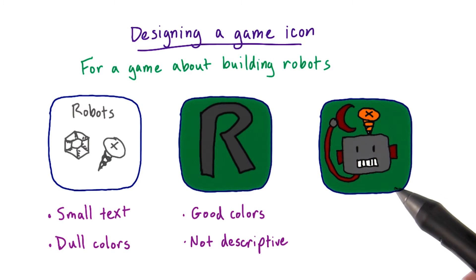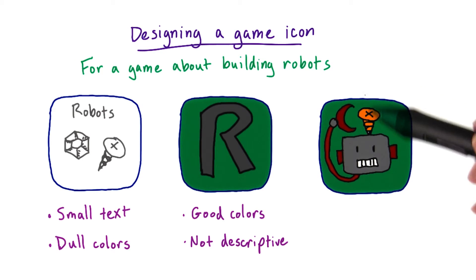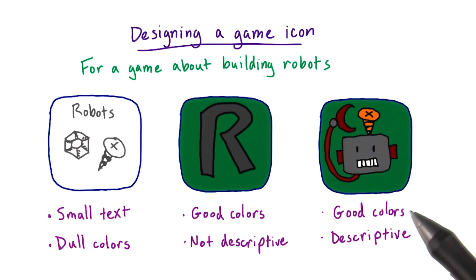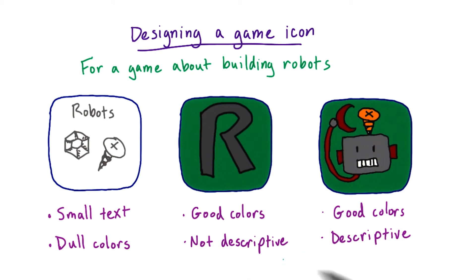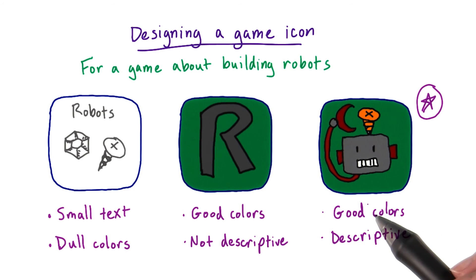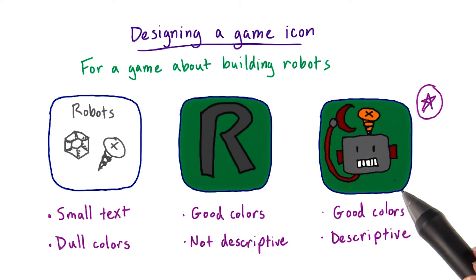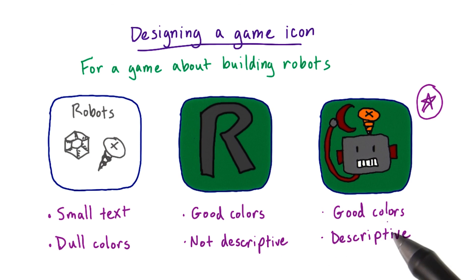And the last option is a picture of a robot with a screw going in his head. It's colorful and descriptive — we immediately know that the game is about robots, and there's no small text. So this looks like the best choice. The next thing a person will see in the App Store after your icon is the game screenshots and description, so let's learn more about these next.